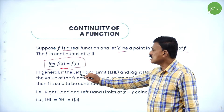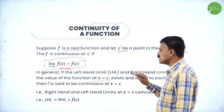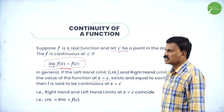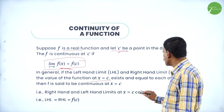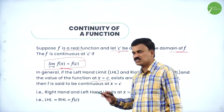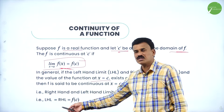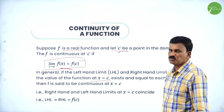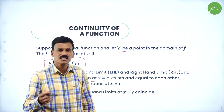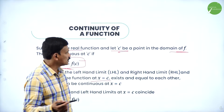In general, if the left hand limit and the right hand limit of the function exist and are equal, and they are equal to the functional value, then f(x) is said to be a continuous function at x = c. That is: LHL = RHL = f(c). The right hand limit and left hand limit at x = c must coincide, meaning both limits are equal to the functional value f(c).